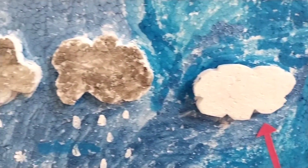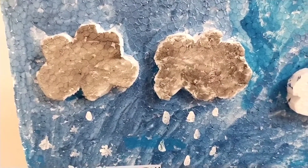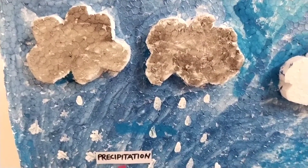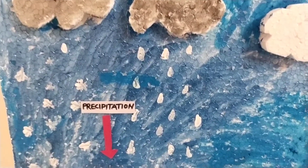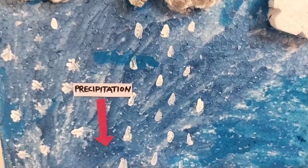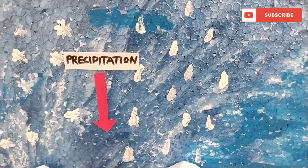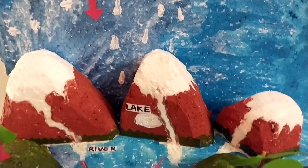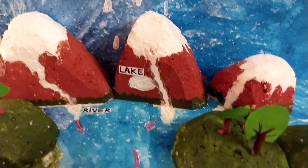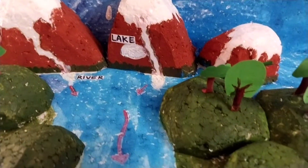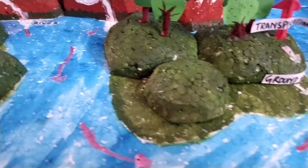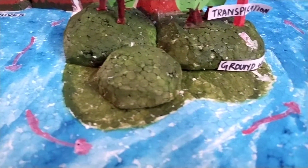When the clouds become very heavy and cannot hold more water, they burst open to give rain or snow. This process is called precipitation. This water then flows to rivers, lakes, oceans, and seas, and into the soil as ground water.